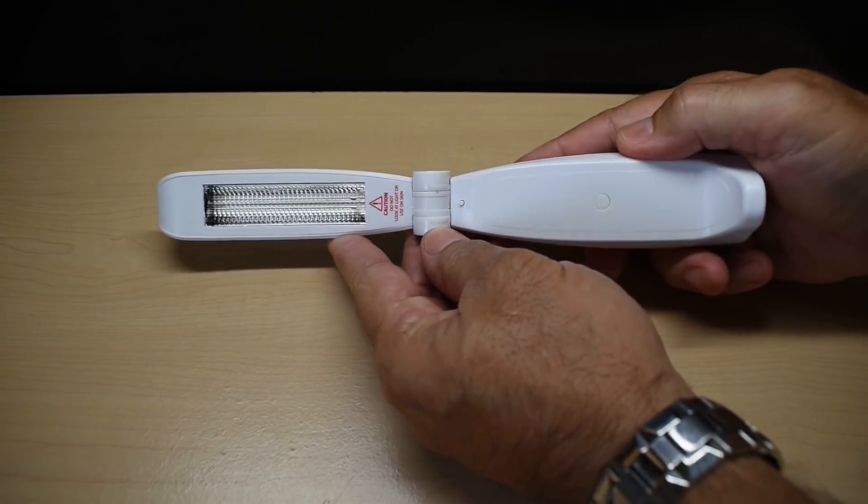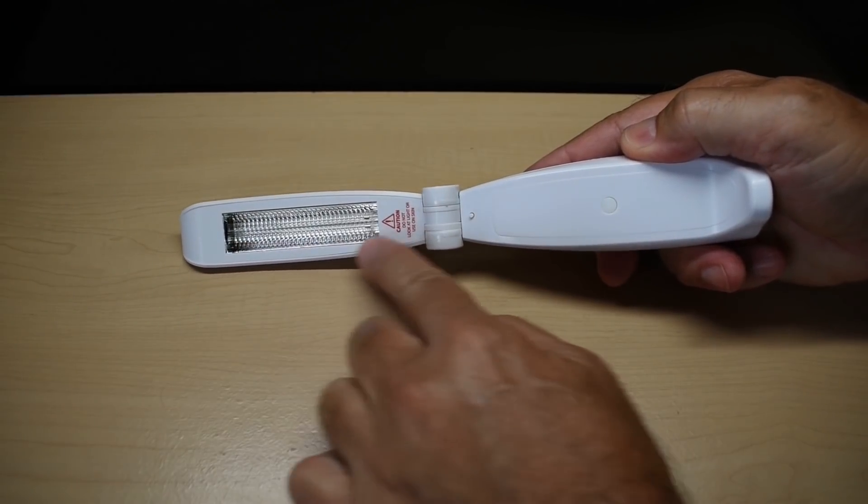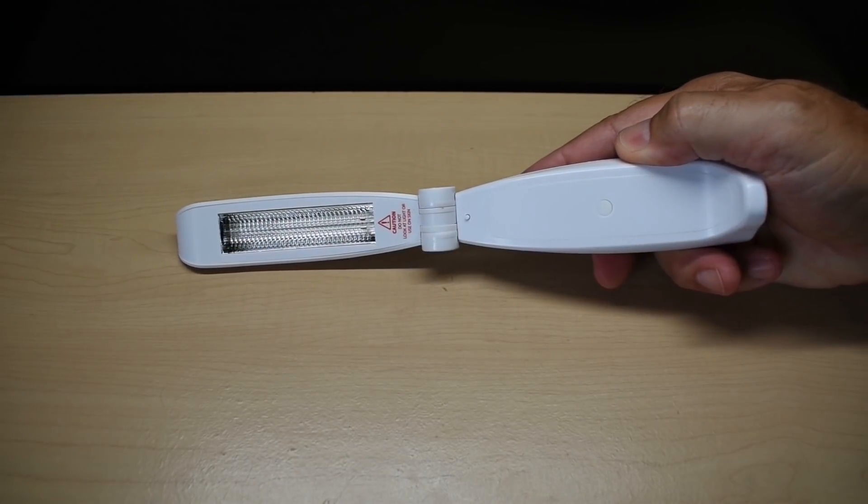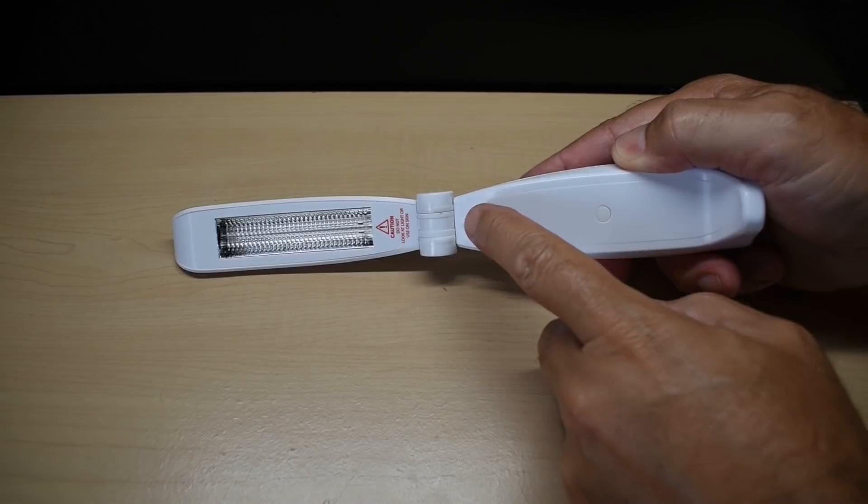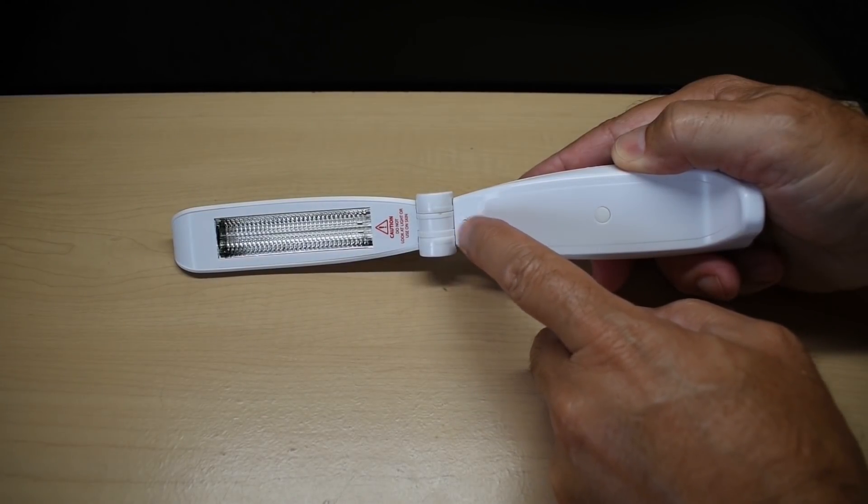As you can see right here, you have a tube, that's where the UVC light's going to be emanating from. And over here, you can see there's a little tiny button.